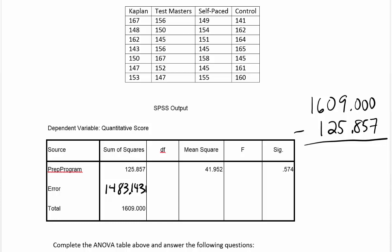Now that we have the error sum of squares filled in, we can go after the degrees of freedom. Degrees of freedom are pretty easy. For the treatments, it's k minus 1, where k is the number of treatments. The number of treatments, or the number of groups or categories, we have 1, 2, 3, 4: Kaplan, Test Masters, self-paced, and control. If we take away 1 from that number, 4 groups minus 1, we end up with 3 as our degrees of freedom.